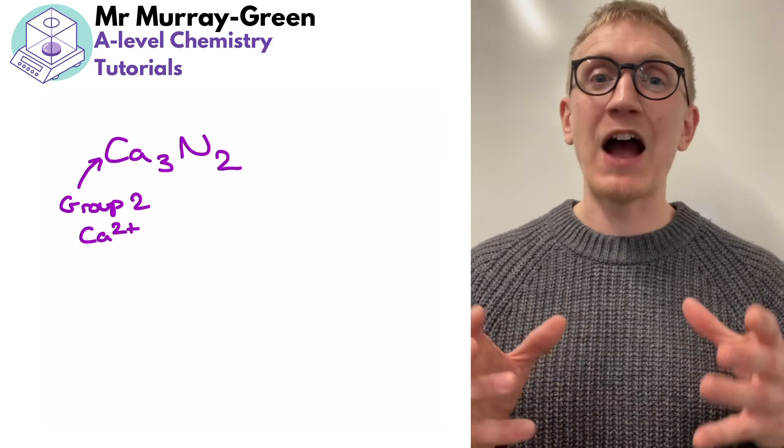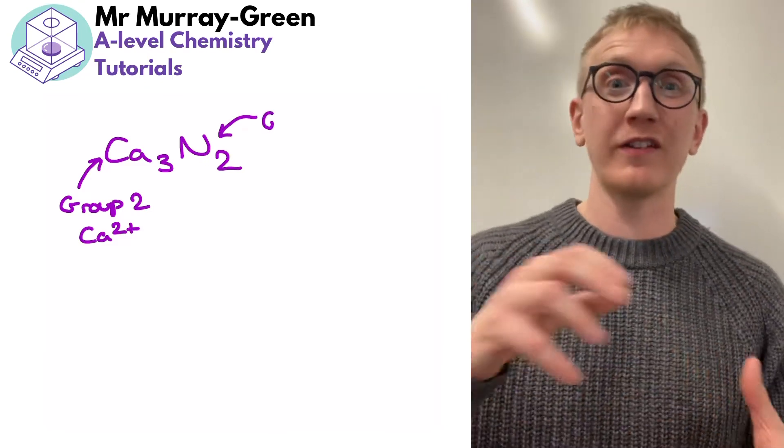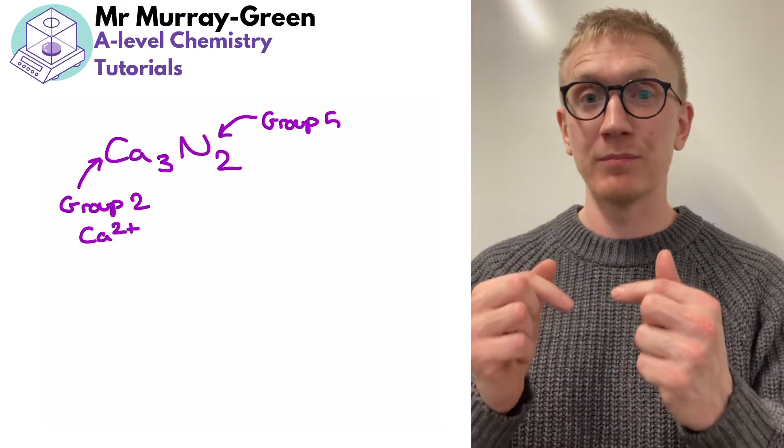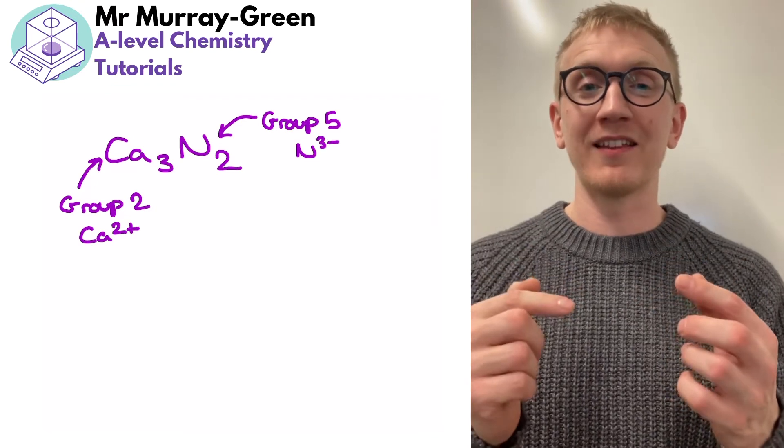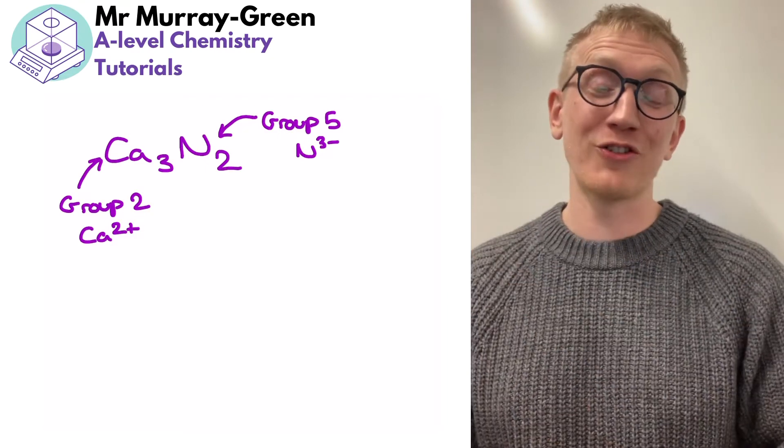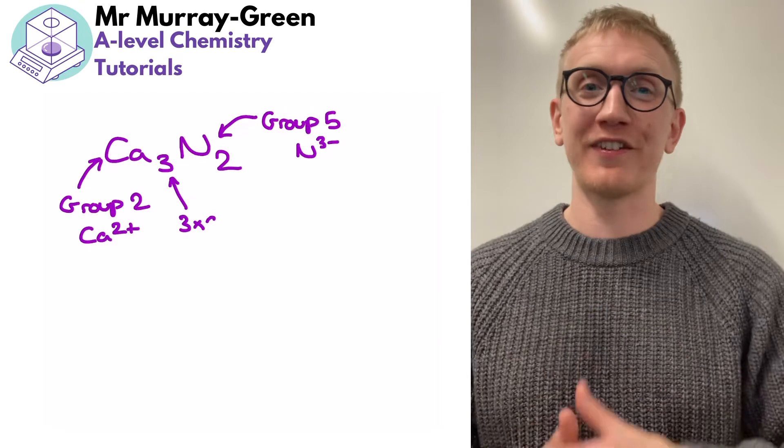I then add however many of the other symbol, so dots instead of crosses or crosses instead of dots, that is necessary to take that inside number, so inside the square brackets, up to eight. So for instance if I was looking at the sodium oxide example I would add in two more electrons to take me from six to eight. Just make sure you use the other symbol.